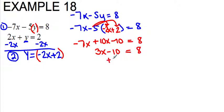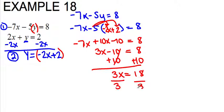To get x by itself, I have to add 10 to both sides. So I have 3x equals 18. To get x by itself, I divide by 3 on both sides. So I know that x equals 6.